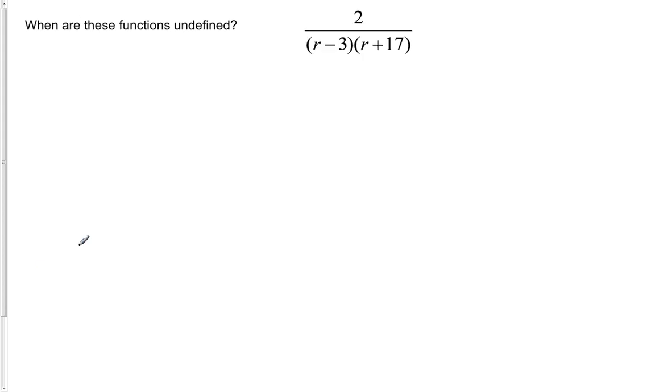Take another example here. When is this one undefined? We don't see any square roots or anything like that, but we do see the potential for zeros in the denominator. So once again, we set our entire denominator equal to zero. So r minus 3, parentheses, times r plus 17 equals zero. Because we're trying to solve for when is it going to blow up in the denominator.